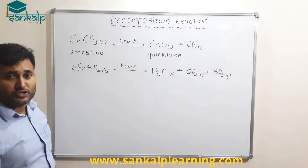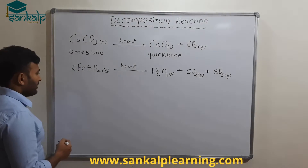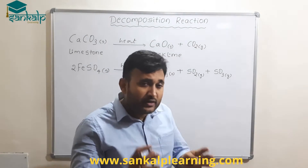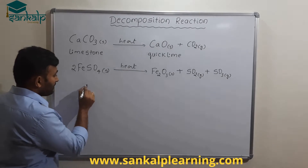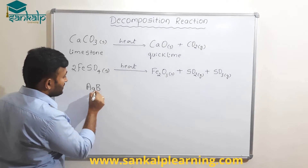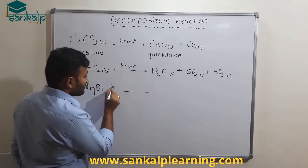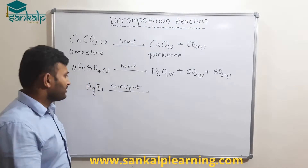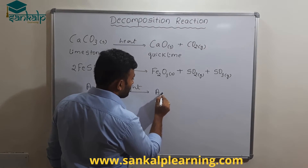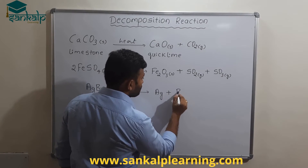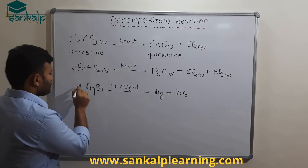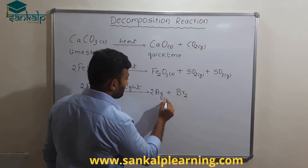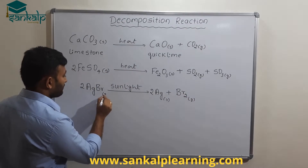One very important reaction used in black and white photography is AgBr, silver bromide. When AgBr absorbs sunlight — sunlight is nothing but energy — it gives silver and bromine gas, Br2. So it should be 2AgBr giving 2Ag plus Br2. This is how the reaction is written and balanced.